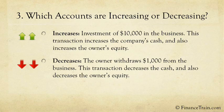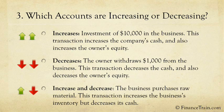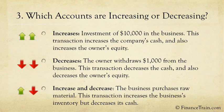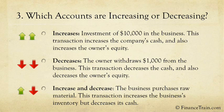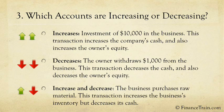The third and most common scenario is where one account increases and the other account decreases. For example, when you buy raw material for production, the transaction increases the business's inventory but decreases its cash. In any transaction, one of these three scenarios exists.